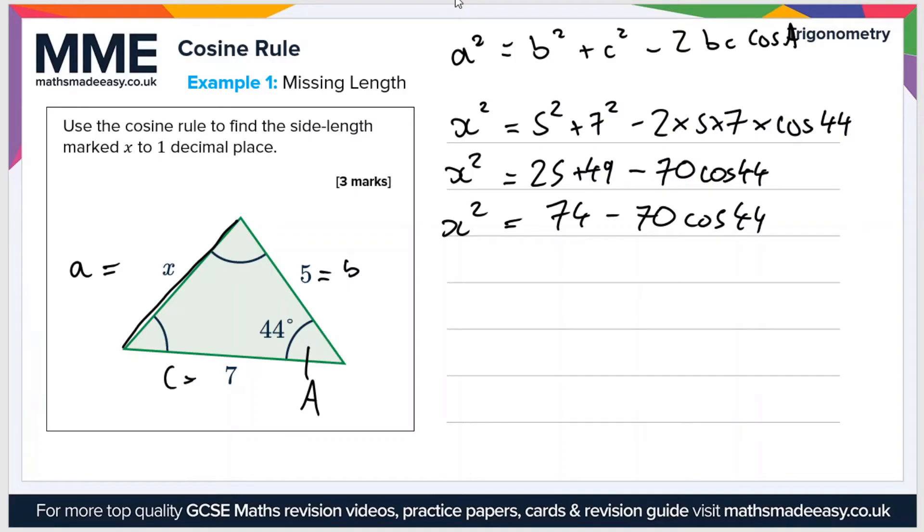We want x. So I'll just bring it down onto the next line here. So x is equal to the square root of 74 minus 70 cos 44.